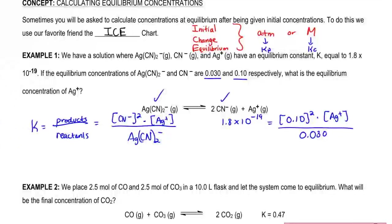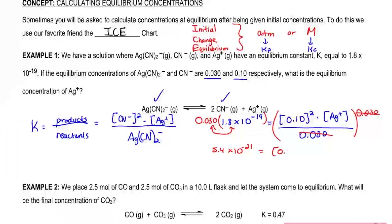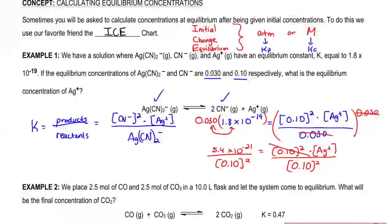All we have to do now is isolate Ag⁺. We multiply both sides by 0.030, which gives us 5.4 times 10 to the negative 21, and that equals 0.10 squared times Ag⁺. We then divide both sides by 0.10 squared. Our final answer for the silver ion concentration will be 5.4 times 10 to the negative 19 molar.